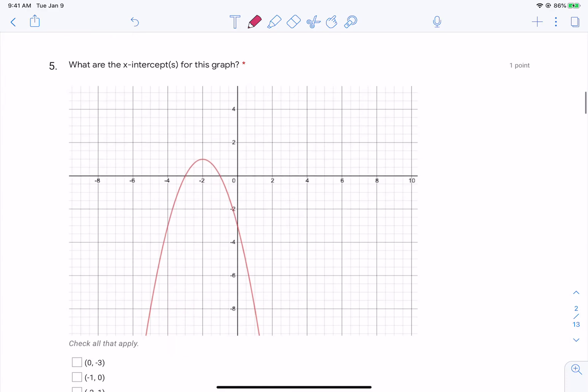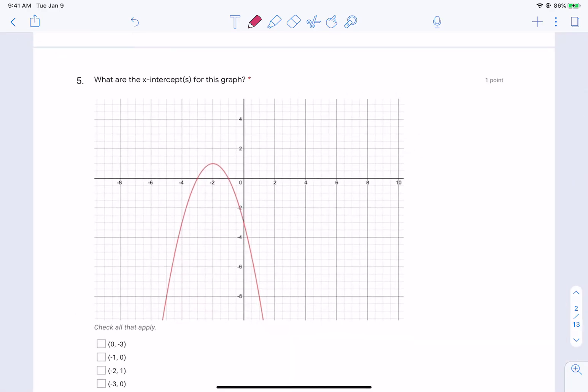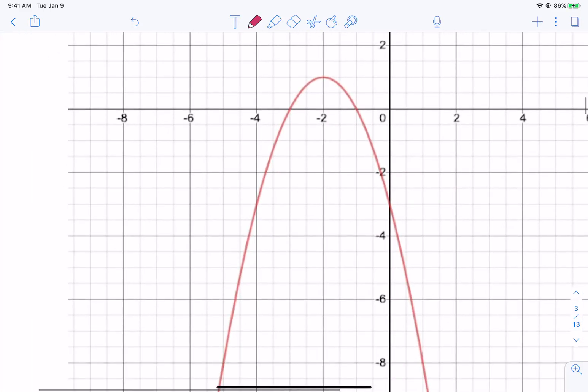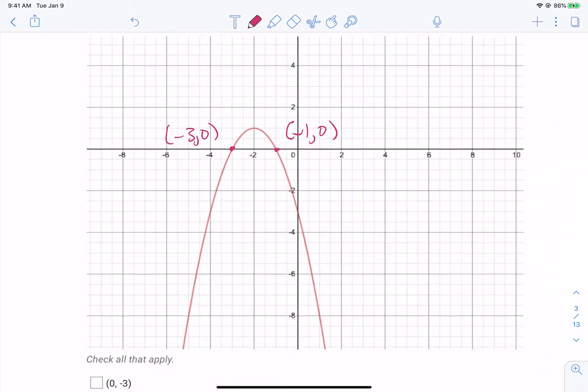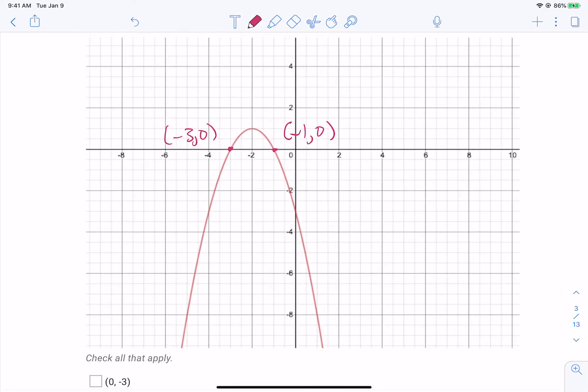X-intercept. So what's the x-intercept, guys? Where you hit what? The x-axis. And so if you look at this graph, this is the point negative three, zero, and this is the point negative one, zero.